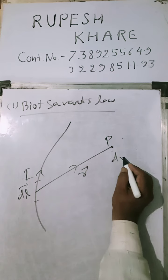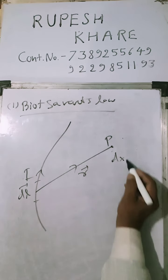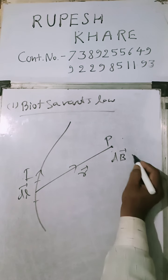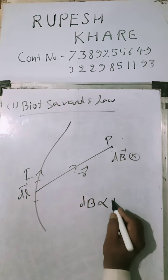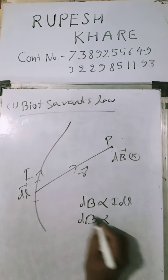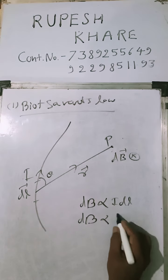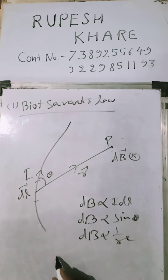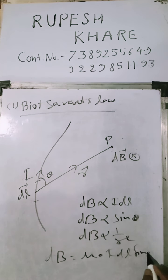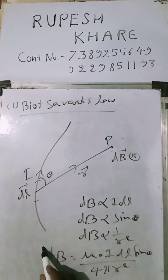At this point, the magnetic field value is db. The magnitude is db proportional to i*dl, db proportional to sin theta, and db proportional to 1 upon r square. Combining them, the formula is db equal to mu_0 i dl sin theta upon 4 pi r square. The proportionality constant is mu_0 upon 4 pi.